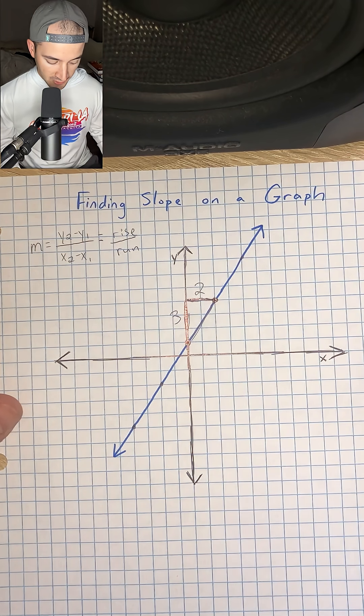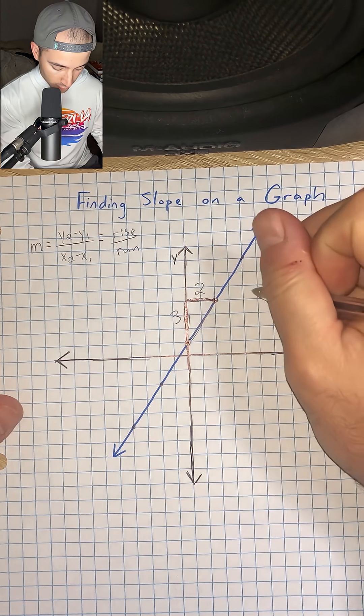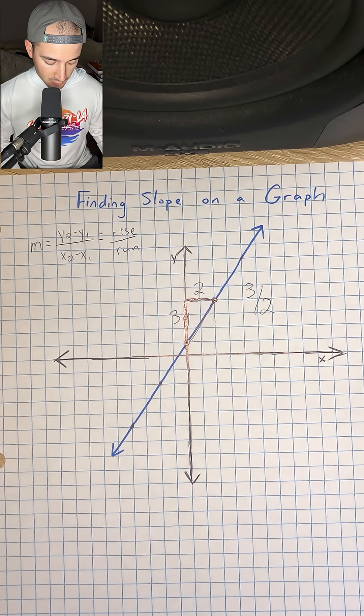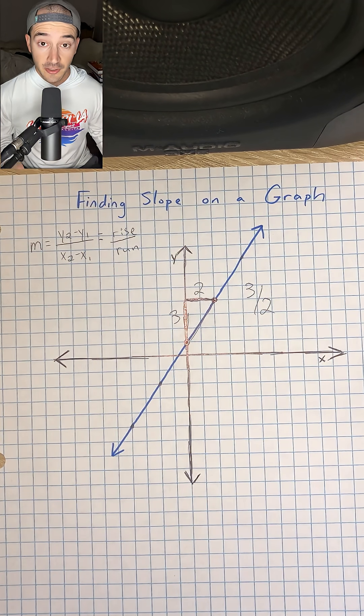And we ran to the right 1, 2, so the 2 goes there. And so now for our slope, we can just put rise over run, which is 3 over 2, and so that is all you have to do to find slope on a graph.